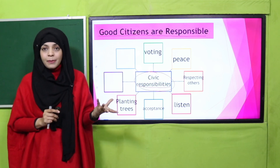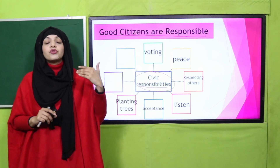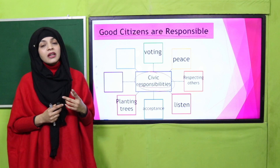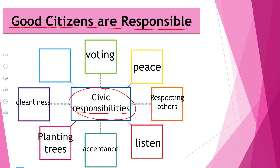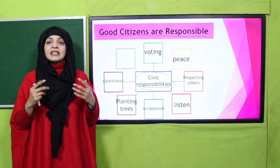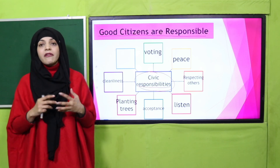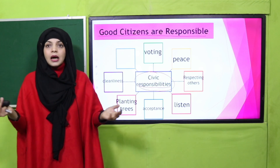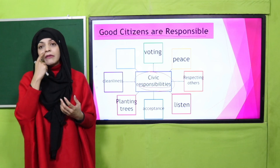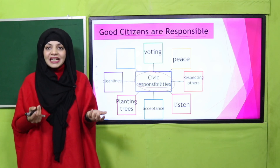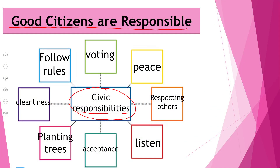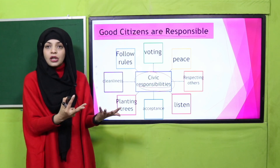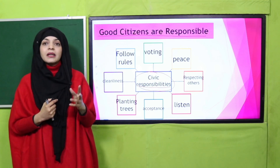Next comes planting trees, which is extremely important. If you want a green environment around you, then planting trees is your responsibility. Then comes cleanliness — again very important. You want a disease-free, germ-free environment, so you must keep everything clean around you. Throw your garbage in the dustbin; do not throw it in the streets or out of your car. Maintaining cleanliness is your responsibility.